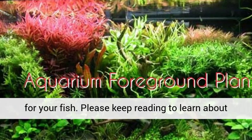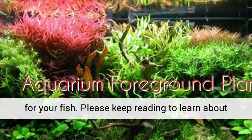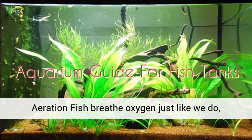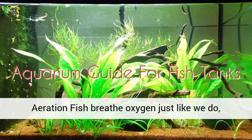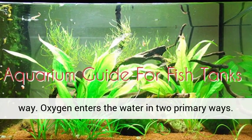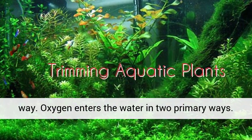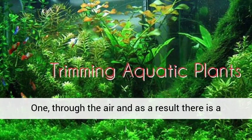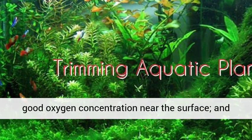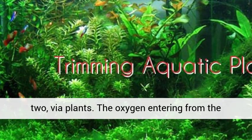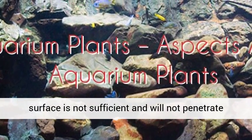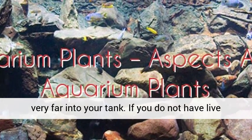Aeration: fish breathe oxygen just like we do, only obviously they do it in a much different way. Oxygen enters the water in two primary ways: through the air, and as a result there is a good oxygen concentration near the surface, and via plants. The oxygen entering from the surface is not sufficient and will not penetrate very far into your tank.